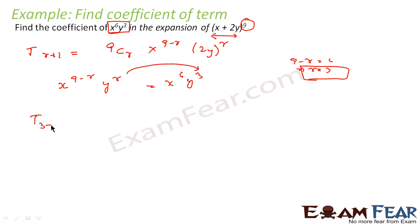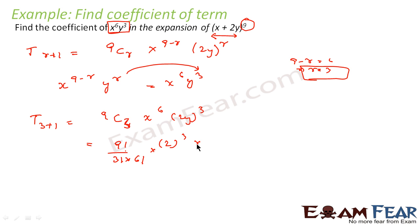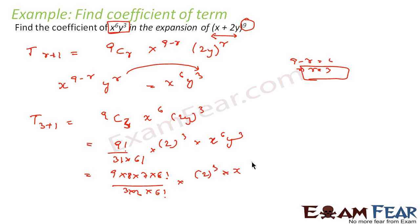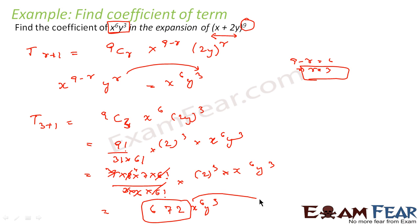So we find T(3+1) = T4 = 9C3 · x^6 · (2y)^3. Now 9C3 = 9! / (3! · 6!) = (9 · 8 · 7 · 6!) / (3 · 2 · 1 · 6!) . Canceling 6! and simplifying gives 9C3 = 84. Multiplied by 2^3 = 8, we get 84 · 8 = 672. So the coefficient of x^6 · y^3 is 672.